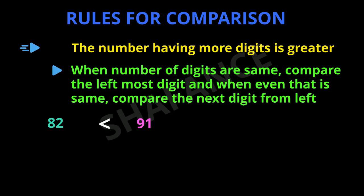Let us take one more example. We have number 45 and the second number is 43. In this case, the leftmost digit of both numbers is the same, that is 4. But the second digit from the left — in 45 we have 5, and in 43 we have 3. So 45 is greater than 43.